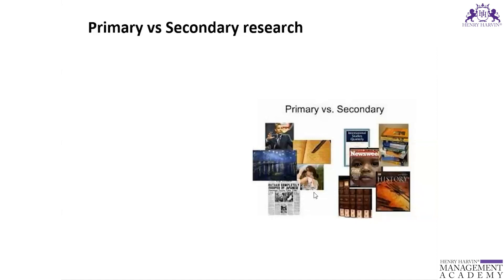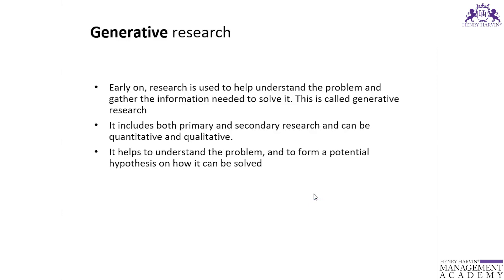It is very difficult to collect primary data from people. The advantage of secondary research is that it is already published and can be cost-effective. The disadvantage is it is not customized for our current research. Generative research helps to understand the problem — it focuses on understanding the exact problem rather than solutions.